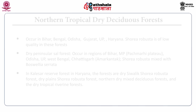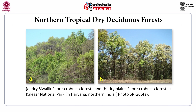The dry deciduous forests in the Kalesar Reserve Forest in Haryana consist of dry Shivalik Shorea robusta and dry plains Shorea robusta forests. These forests also include the northern dry mixed deciduous forest and the dry riparian forest. This picture shows the northern tropical dry deciduous forest in Kalesar National Park.